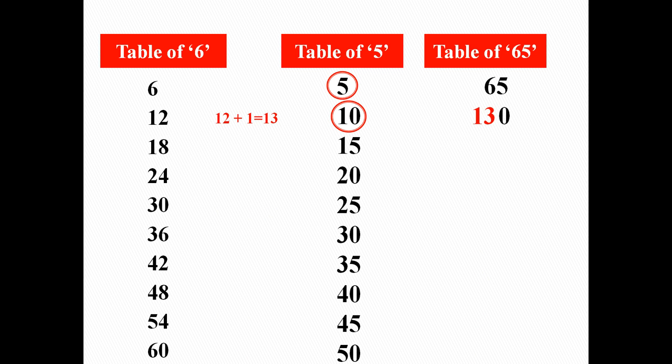In the third row, again a 2-digit number, that is 1, 5. So we will write 1 with the digit as it is, that is 5, and add 18 and 1, it will become 19. Write this 19 before 5 in the table of 65 — it will become 195. So we can say that 65 3's are 195.